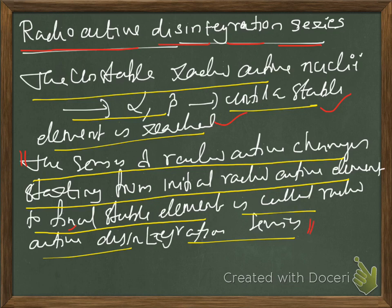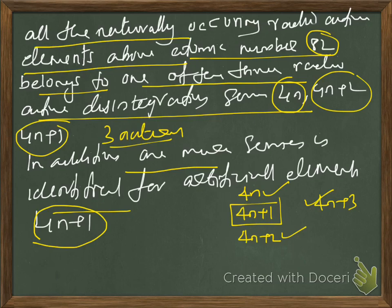This definition you have to keep in mind for your examination. The whole series of processes which take an unstable nucleus to a stable nucleus is called radioactive disintegration series. We have three natural series and one artificial series. All the naturally occurring radioactive elements above atomic number 82 — that is lead — belong to one of the three radioactive disintegration series: 4n, 4n+2, and 4n+3.